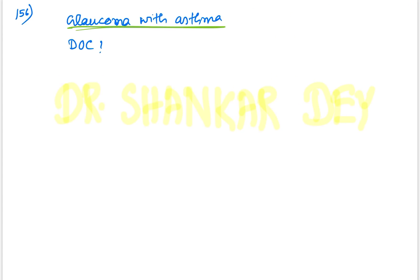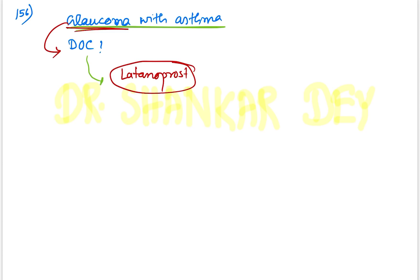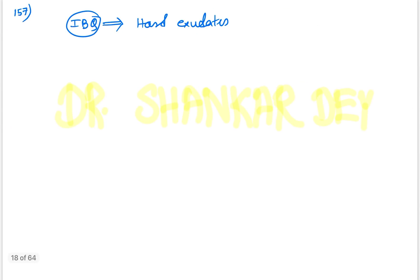Question 156: A patient with glaucoma and asthma — which drug to use? Options included latanoprost and brimonidine among others. According to national level faculties, the answer should be latanoprost.